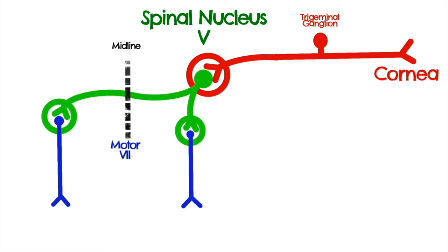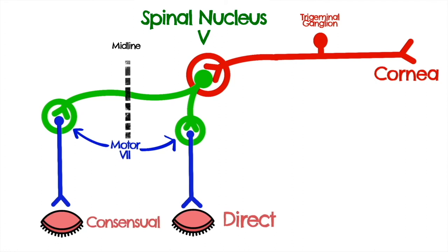As you can see from the diagram, a foreign object activating the corneal reflex results in both eyes blinking. The eye that was initially touched by the foreign object is said to have a direct response and the adjacent eye a consensual response.